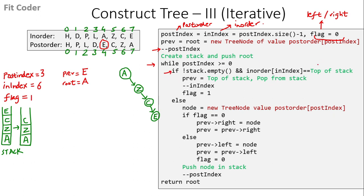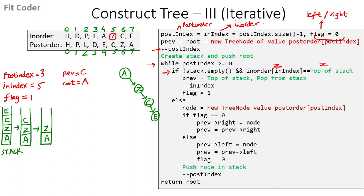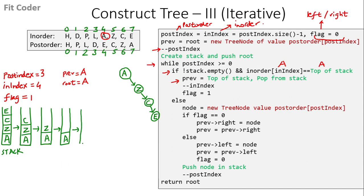In the next iteration, top of the stack is C and the inorder index is also C — equal. We set previous to C and pop from the stack, decrement inindex to 5, and set flag to 1. Next, top of the stack is Z and inorder index is also Z — equal. Previous becomes Z, we pop, decrement inindex to 4, and set flag to 1. Next, top of the stack is A and inorder index at position 4 is also A — equal. We set previous to A, pop from the stack (stack is now empty), decrement inindex to 3, and set flag to 1.